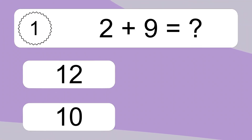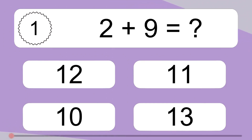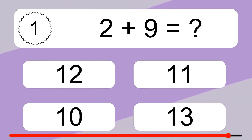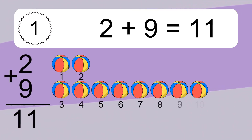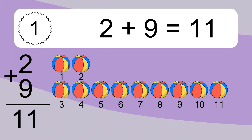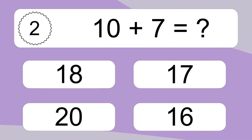2 plus 9 equals what? 1, 2, 3, 4, 5, 6, 7, 8, 9, 10, 11.